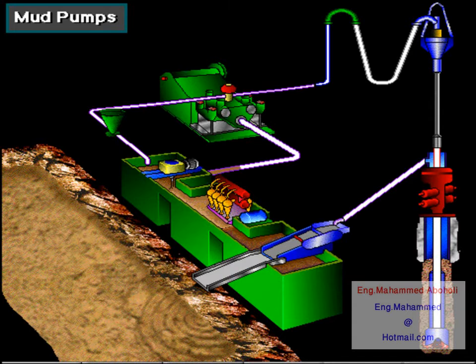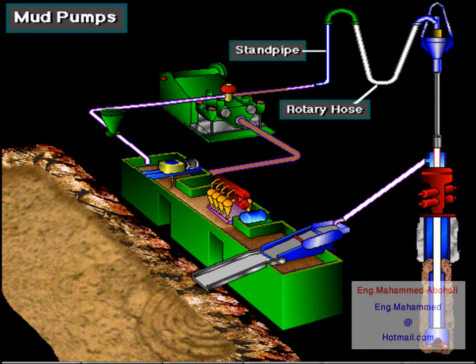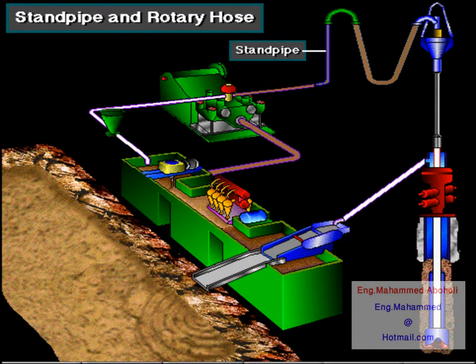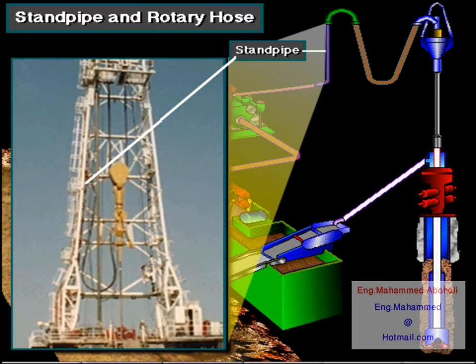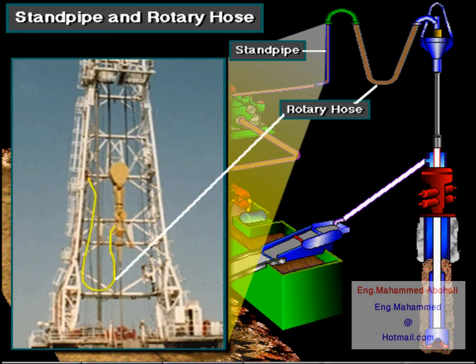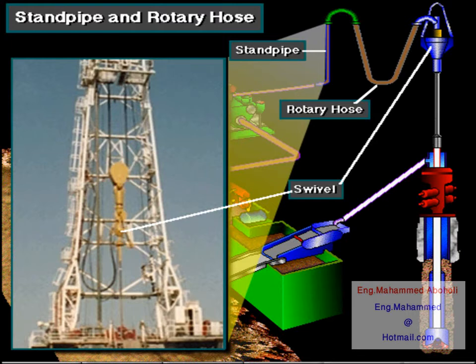The powerful pump, or pumps, pick up mud from the mud tanks and send it to the drill string and bit. The pump moves the mud into the discharge line, up the standpipe, and into the rotary hose. The standpipe takes the mud about halfway up the mast. The rotary hose is a strong, flexible hose that moves with a swivel as it goes up and down in the mast.